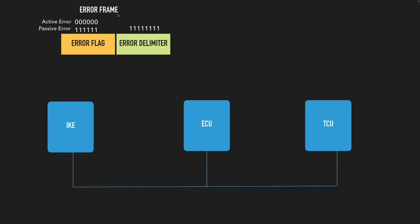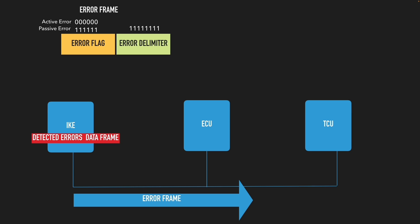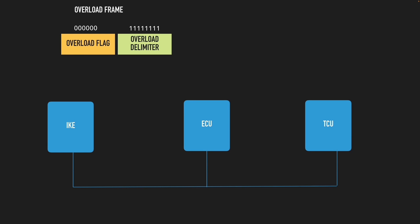The error frame is a very short frame consisting of an error flag and an error delimiter. The error flag is six bits wide and can be an active error or a passive error — sending zeros or ones respectively. A passive error typically indicates the device has exceeded its error count but is still on the bus. When a CAN controller detects errors in a received data frame, it immediately sends out an error frame across the bus. All other nodes will then discard that specific data frame, and most likely there will be a retransmission.